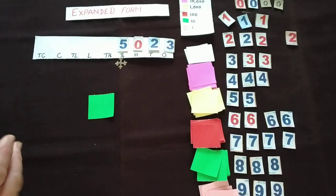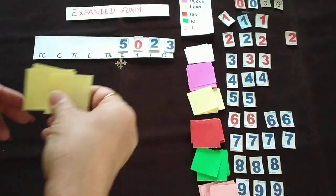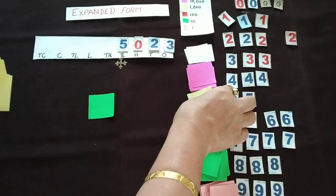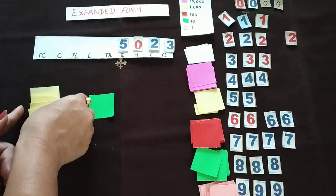So now here 1000. 1000 means which color here? Yellow color. How many sheets are required? 5: 1, 2, 3, 4, and 5. So these 5 sheets even you can keep like this also.